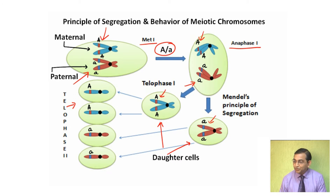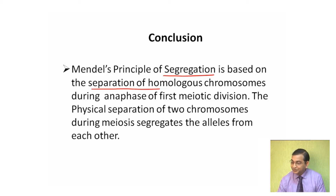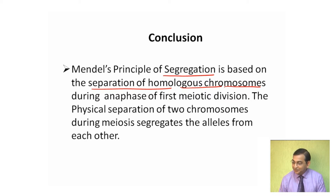From this we can draw the conclusion that Mendel's principle of segregation is based on the separation of homologous chromosomes during anaphase of the first meiotic division. The physical separation of chromosomes during meiosis segregates the alleles from each other. So we find there is a segregation of chromosomes and also segregation of alleles — a parallel behavior of chromosomes and alleles.